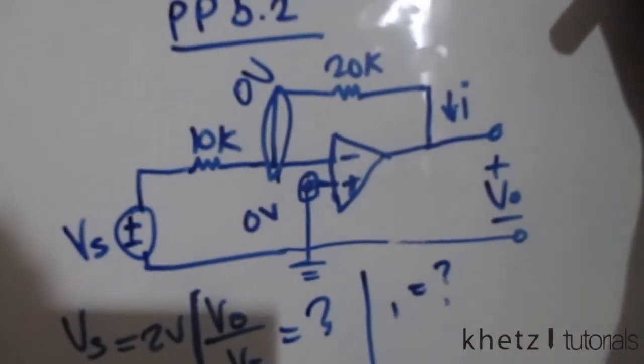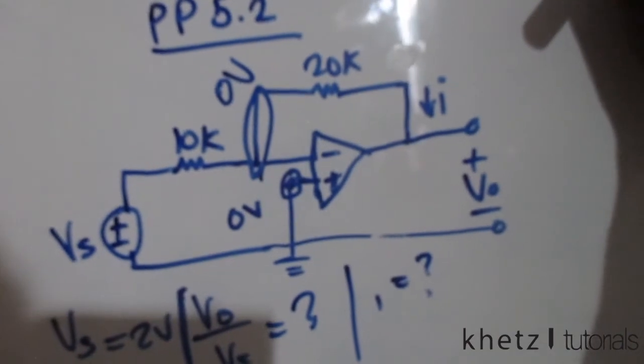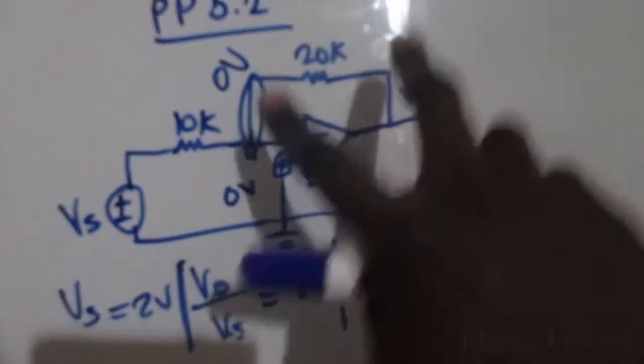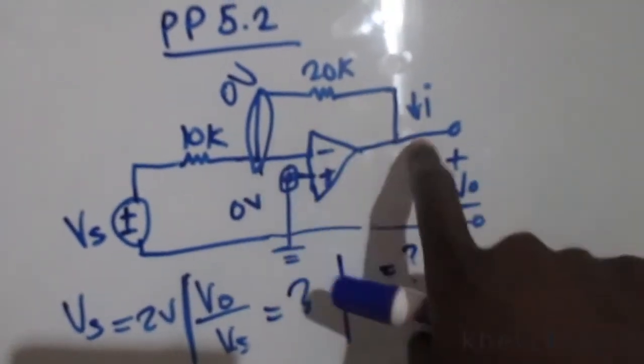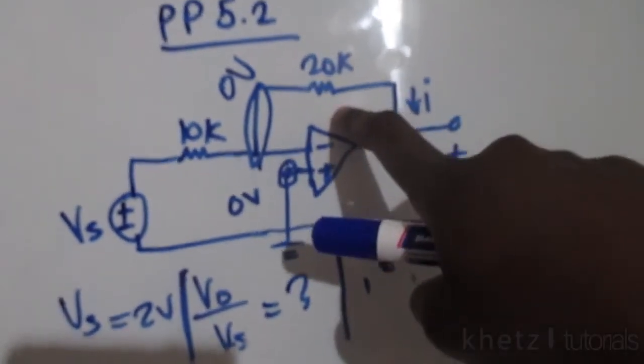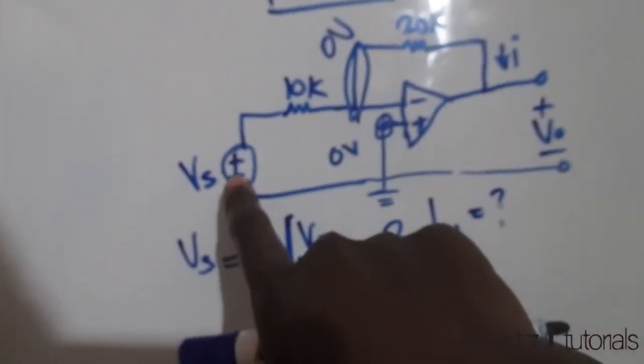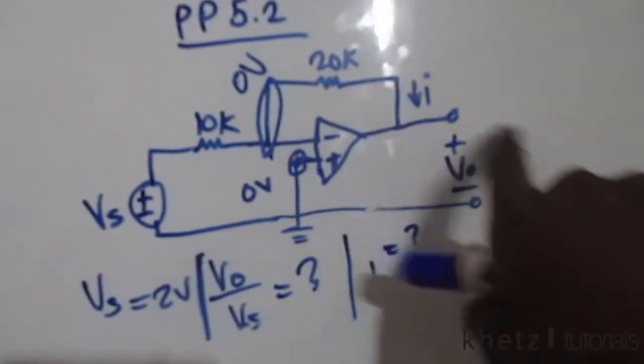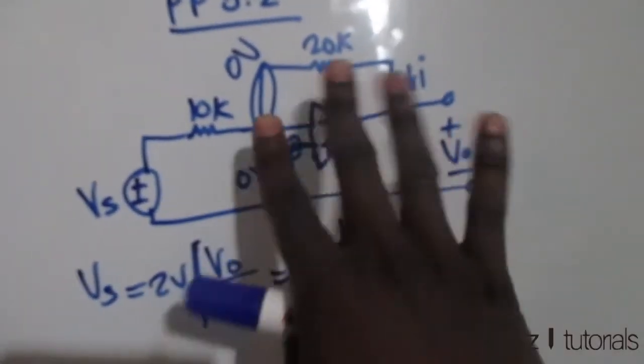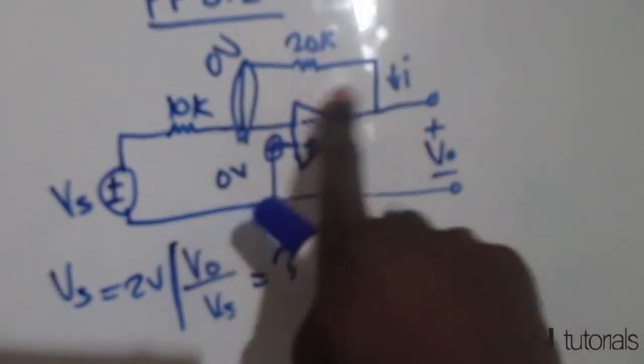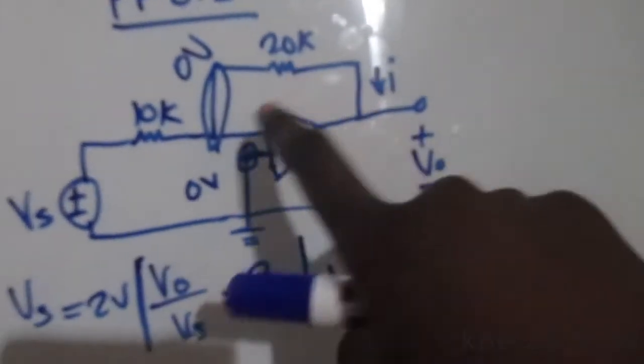One of them being just splitting this into zero subtract Vo divided by 20k, or going all the way and say Vs subtract Vo divided by the sum of these. Let's just take it from this point because it's the same current all the way through.